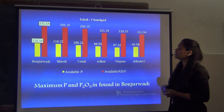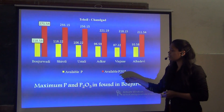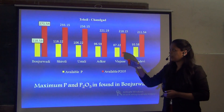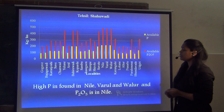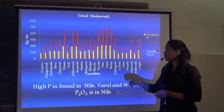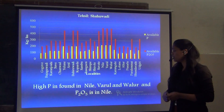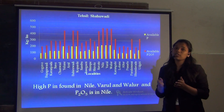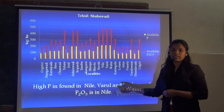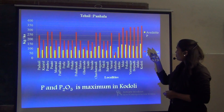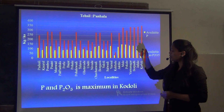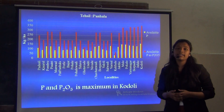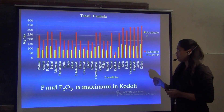From Tessit Chandhar we have maximum Phosphorus and Phosphorus Pentaoxide found in the Bodhzurwadi. From the Shavwadi Tessit we have a high amount of Phosphorus found in the Nere, Varul and Varul regions, where the Phosphorus as Phosphorus Pentaoxide is found in the Nere region. From Tessit Pannada, Phosphorus and Phosphorus Pentaoxide is maximum in the Koduli region.